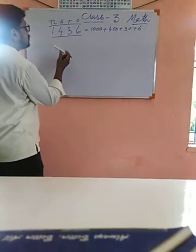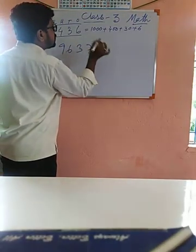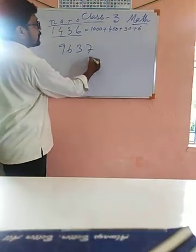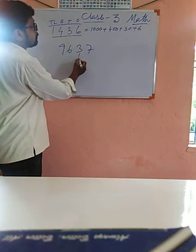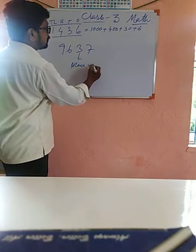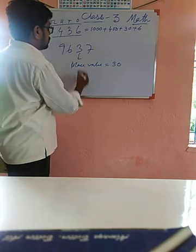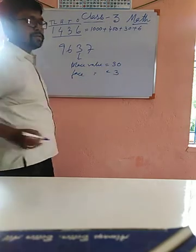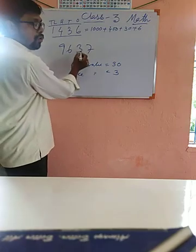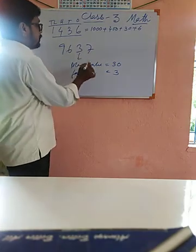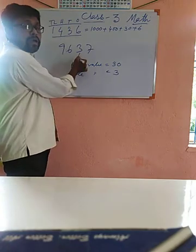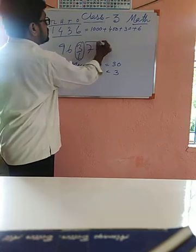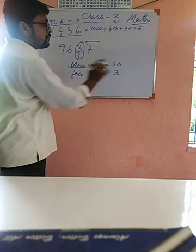Suppose nine six three seven: that is nine thousand six hundred thirty seven. The place value of seven is seven, and its face value is also seven. Three's place value is thirty, but its face value is only three. So face value is always the number itself, but place value is determined by where the digit belongs — its position in the number.